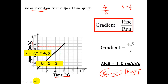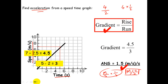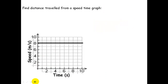Depending on how the question is marked, you can potentially get a mark for the correct formula and showing the correct method, a mark for the correct answer, and a mark for the correct units. Now let's have a look at another thing — finding the distance travelled from a speed-time graph.